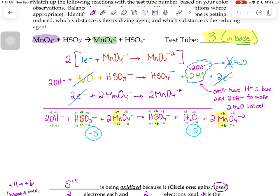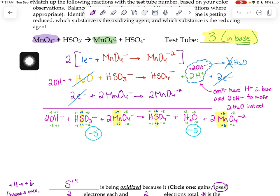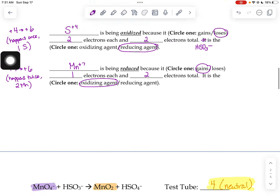For this demo, we're trying to figure out which test tube goes with which reaction. When you look at the three reactions given to you in this demo, the reactants are always a permanganate ion and this HSO3- ion every time.